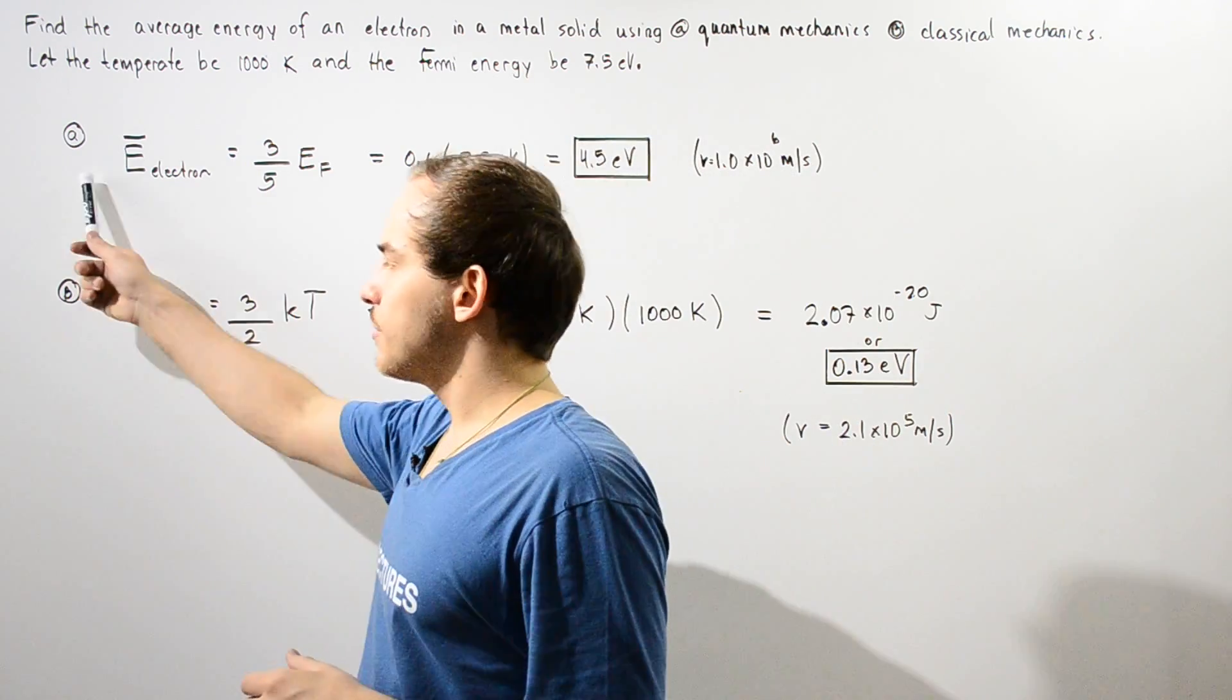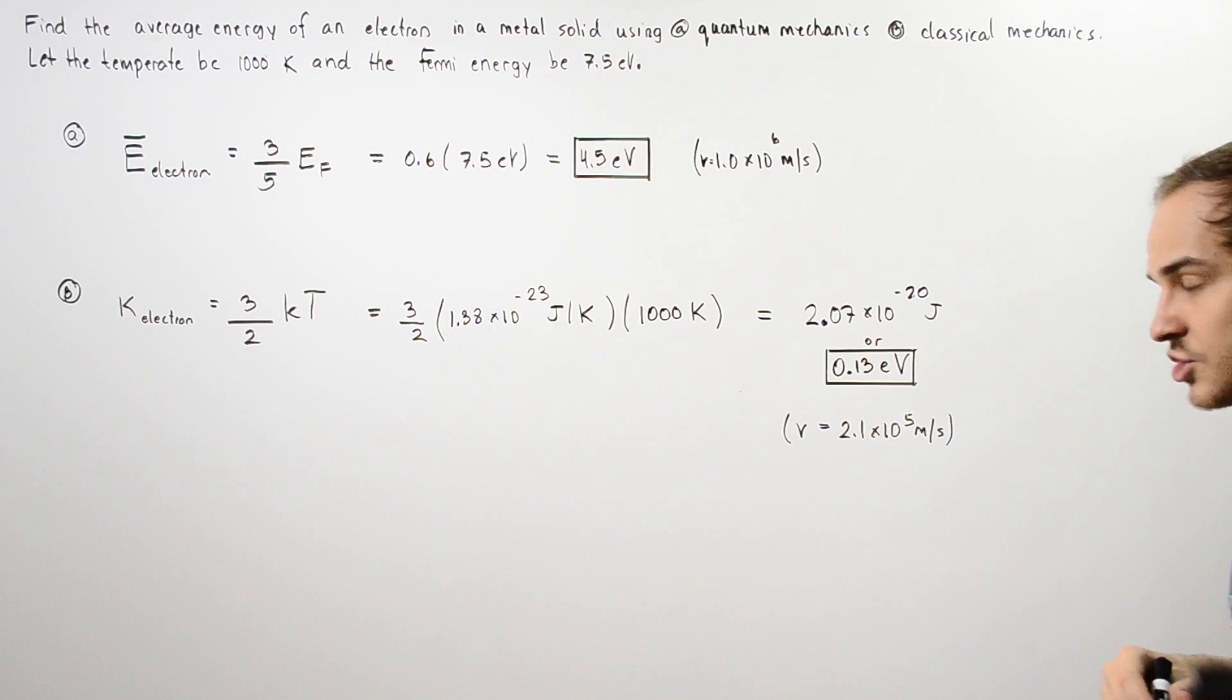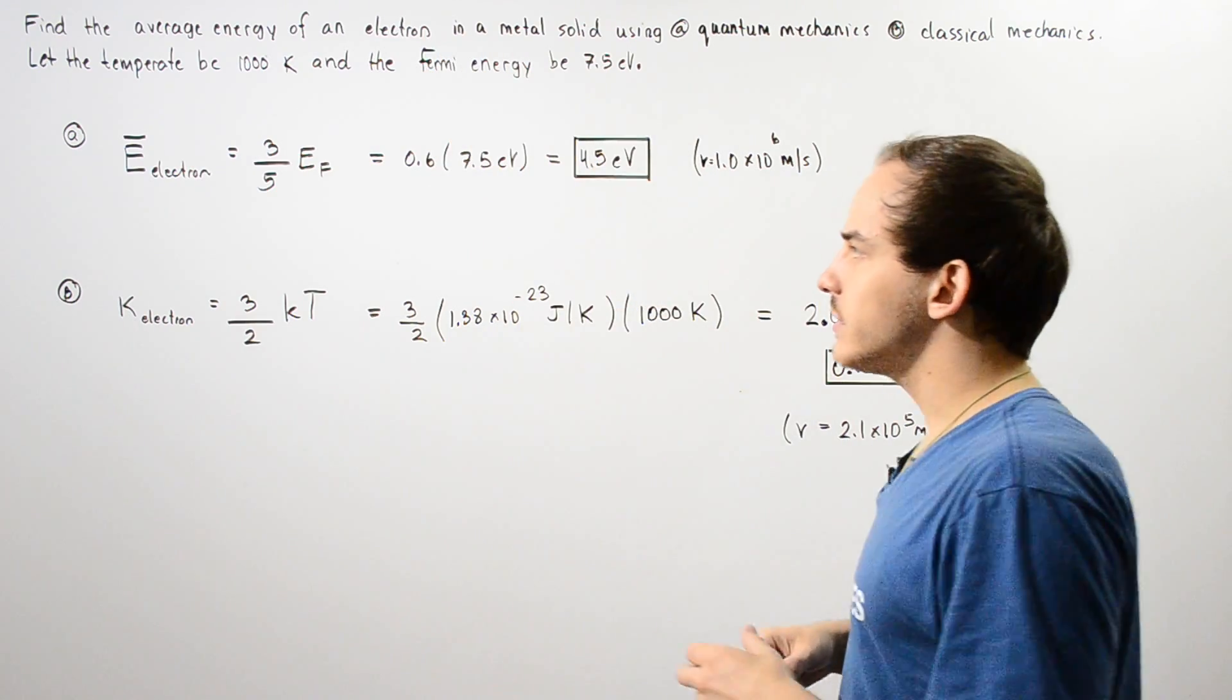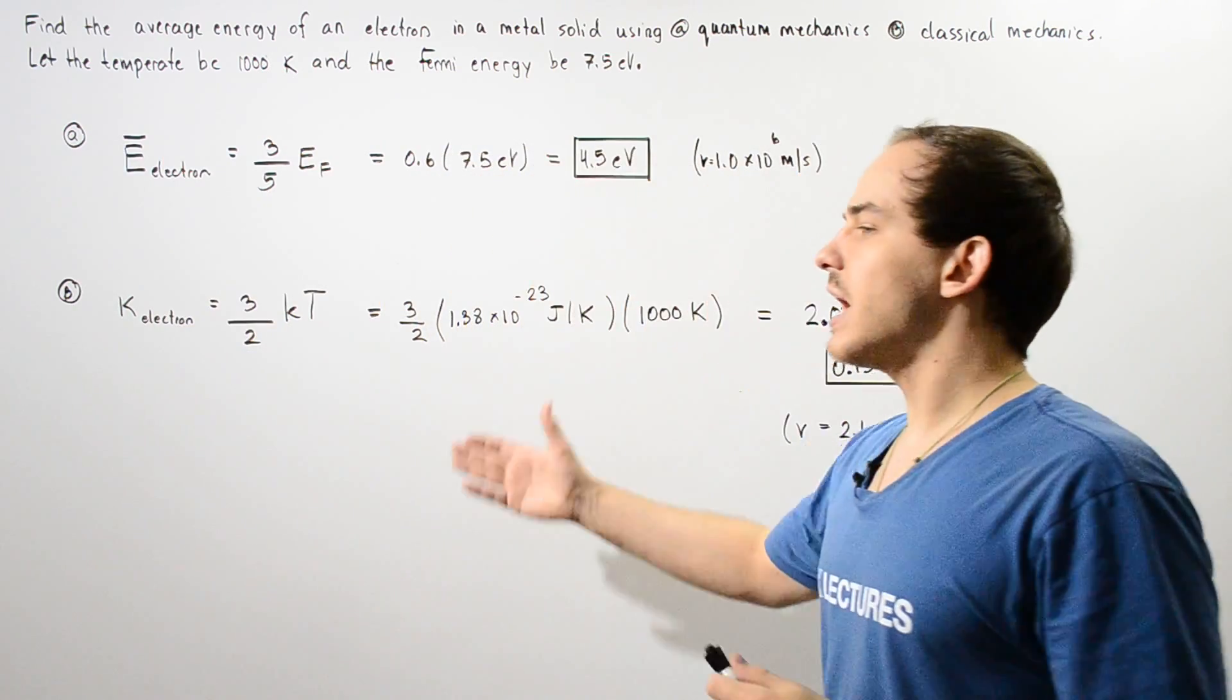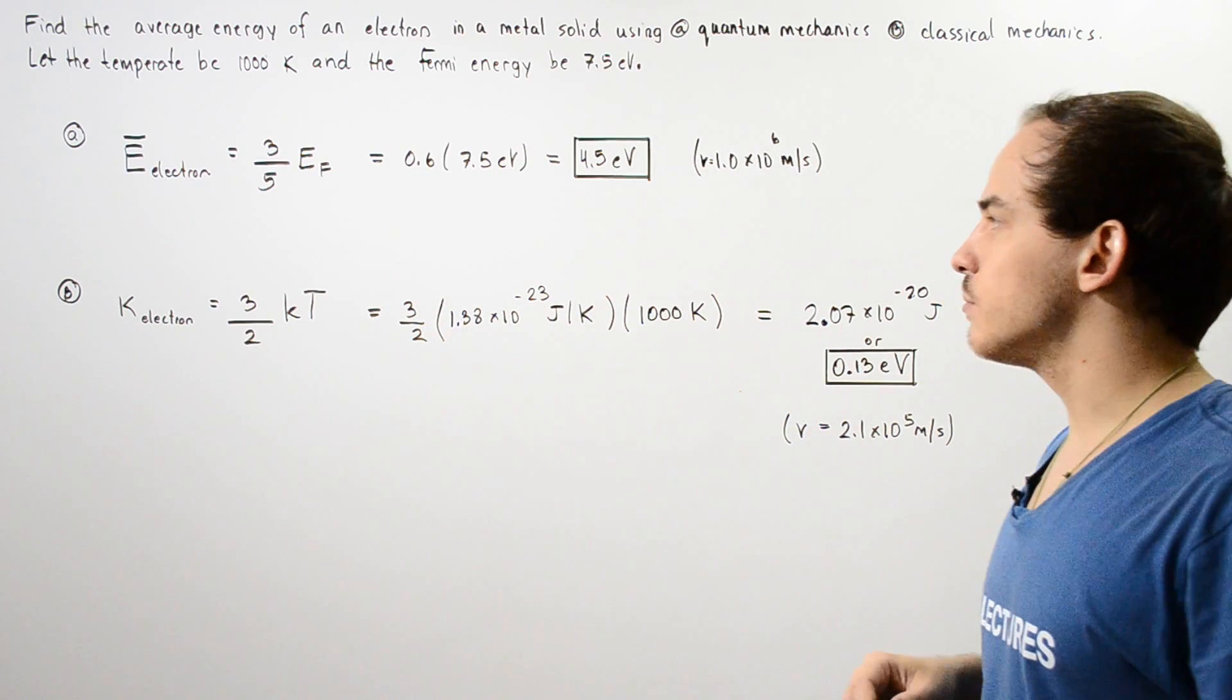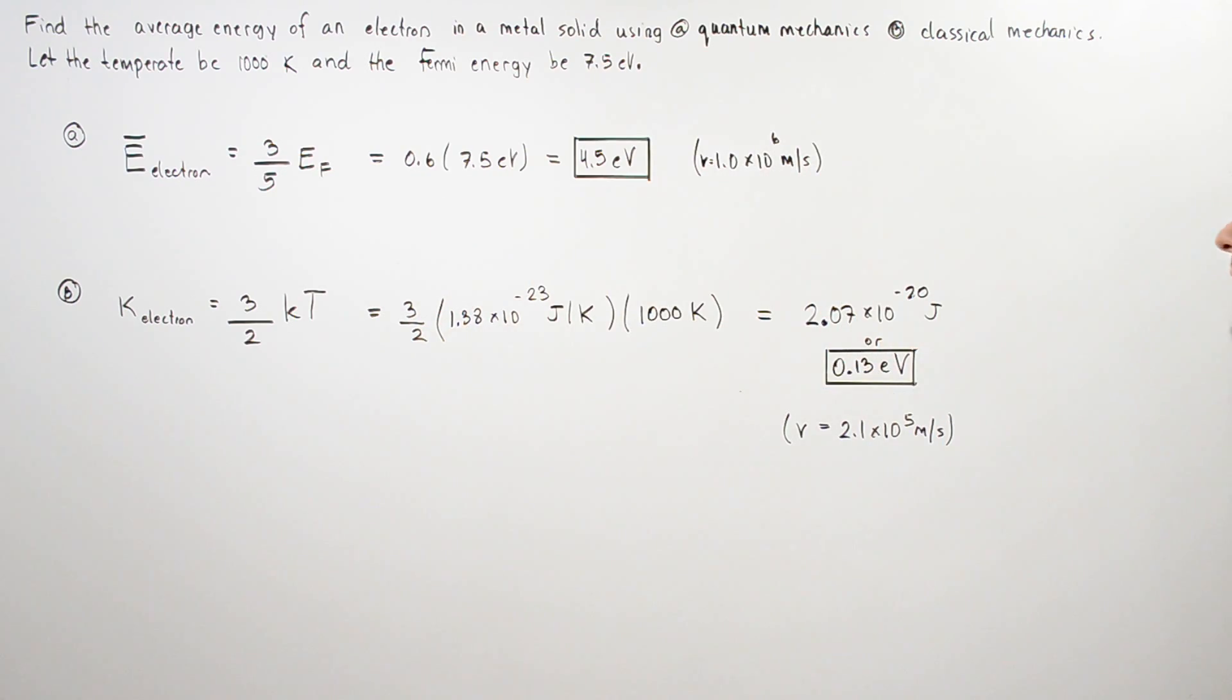Let's begin with part A. In part A we apply quantum mechanics, so we use the Fermi energy. To calculate the average energy of an electron, we simply multiply the Fermi energy by 3/5 or 0.6, and we get about 4.5 electron volts.